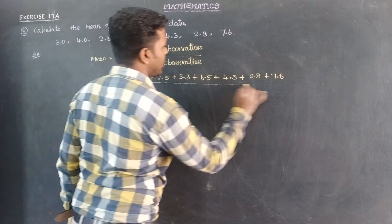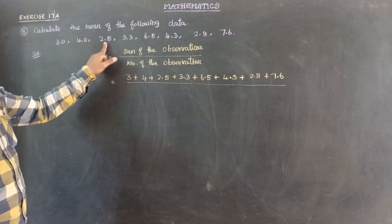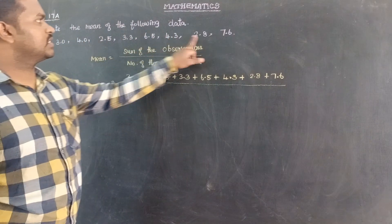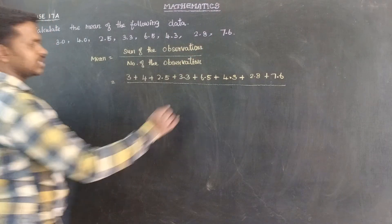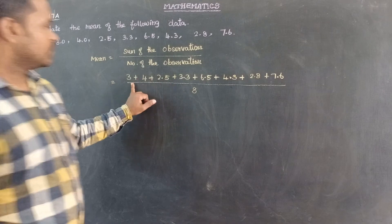It is divided by number of observations. So you know number is called 1, 2, 3, 4, 5, 6, 7, 8. So it is equal to 8 numbers. Number of observations are 8. It is divided by 8.